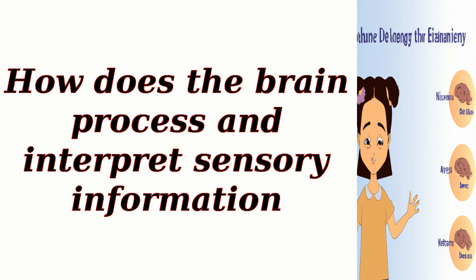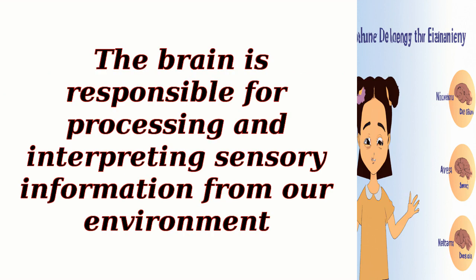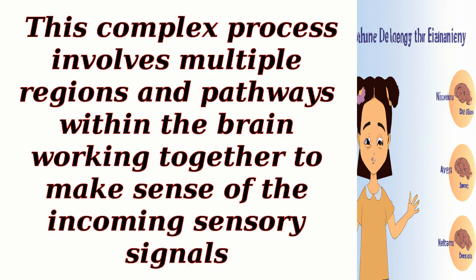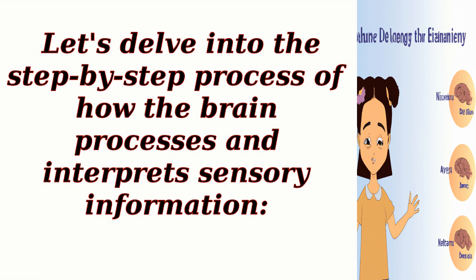How does the brain process and interpret sensory information? The brain is responsible for processing and interpreting sensory information from our environment. This complex process involves multiple regions and pathways within the brain working together to make sense of the incoming sensory signals. Let's delve into the step-by-step process of how the brain processes and interprets sensory information.